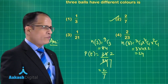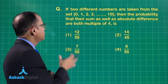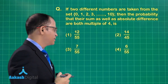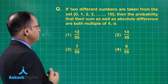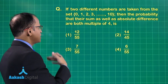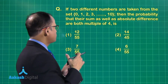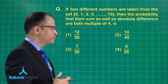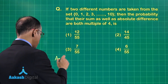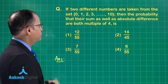The next question: two different numbers are taken from the set {0, 1, 2, 3, ..., 10}. The probability that their sum as well as their absolute difference are both multiples of 4 is required. This is again a straightforward problem.